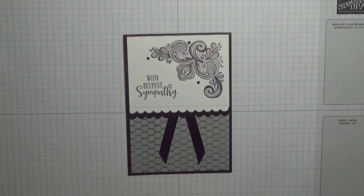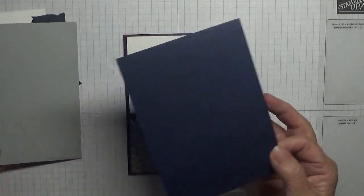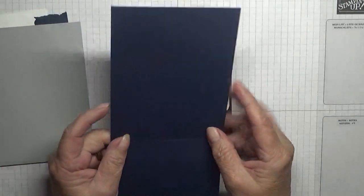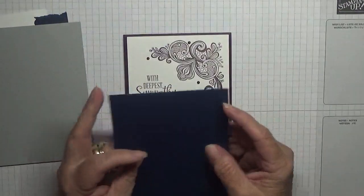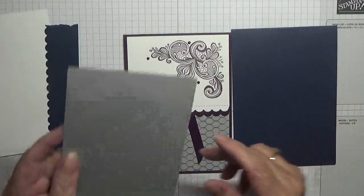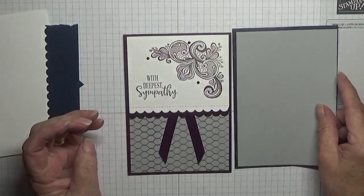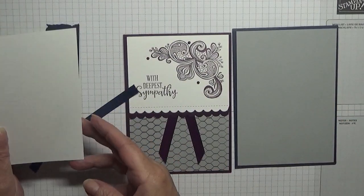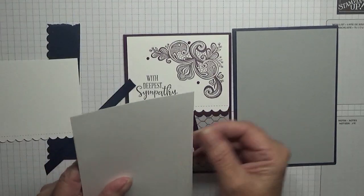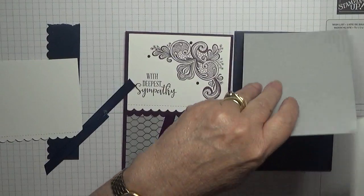For the card I've got Night of Navy at 11 and 3/4 by 4 and 1/8 folded in half, piece of Smoky Slate at 5 and 5/8 by 3 and 7/8, and a piece of Basic White at 5 and 5/8 by 3 and 7/8 for the inside.